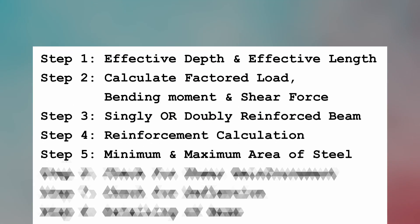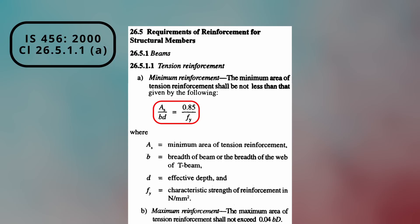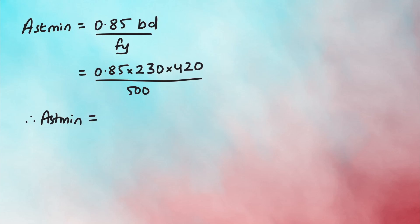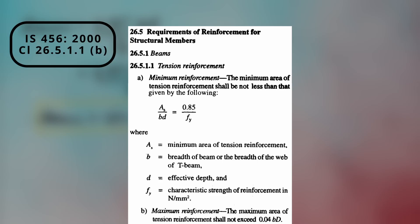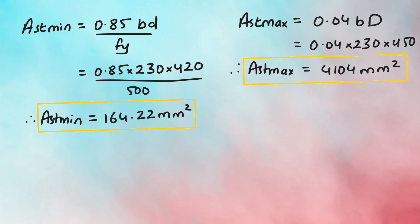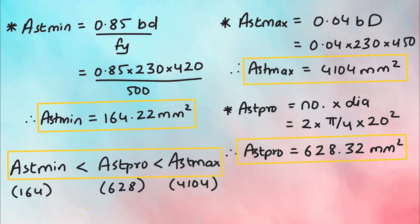We also check for maximum and minimum area of steel. As per clause 26.5.1.1A, minimum area of steel in the tension zone shall not be less than 0.85 × B × D / fy, which gives 164 mm². Clause 26.5.1.1B states the maximum area of reinforcement shall not exceed 0.04 × B × D, which is 4104 mm². The area of steel provided is higher than the minimum and less than the maximum, so our design is acceptable.